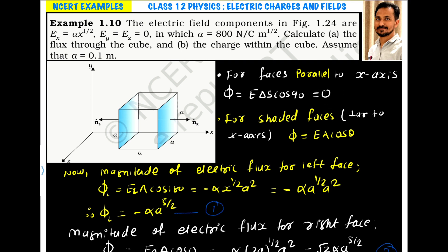For shaded faces that are perpendicular to x axis, that is left and right face, we can write flux equals EA cos θ. Magnitude of electric flux for left face is El times area of the face times cos 180. Why 180? Because area vector is outward normal and the electric field is towards right side, so the angle is 180.